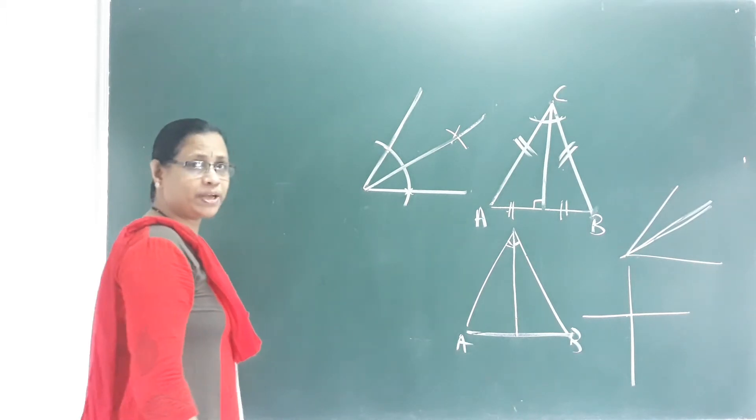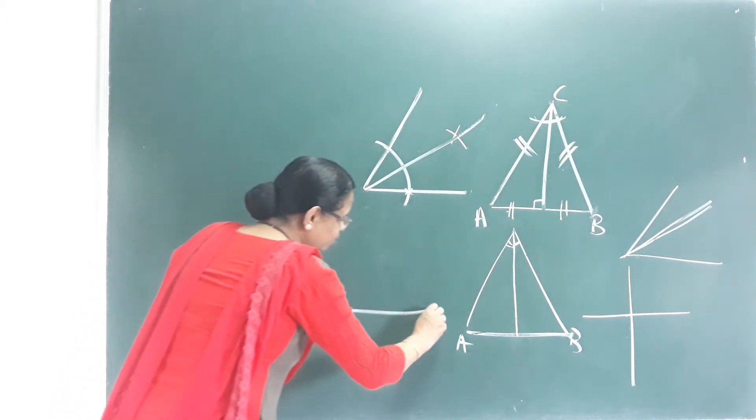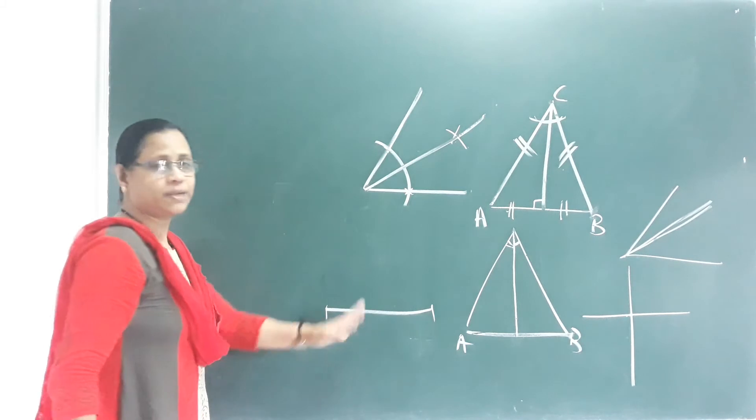If we are talking about the bisector, where is the angle bisector? This angle is 6 cm.